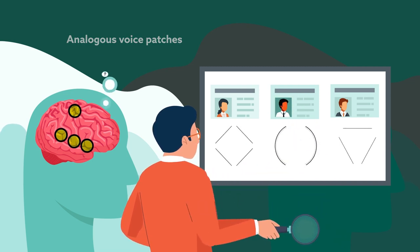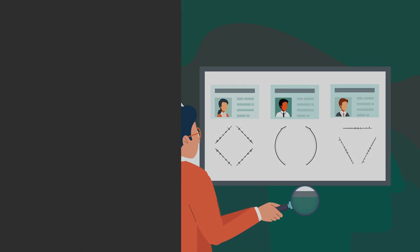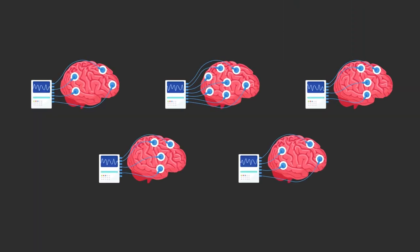However, the functions and connections of voice patches aren't clear. To learn more, researchers recently took advantage of electrodes that had been placed in the brains of five patients with epilepsy who were native Chinese speakers.